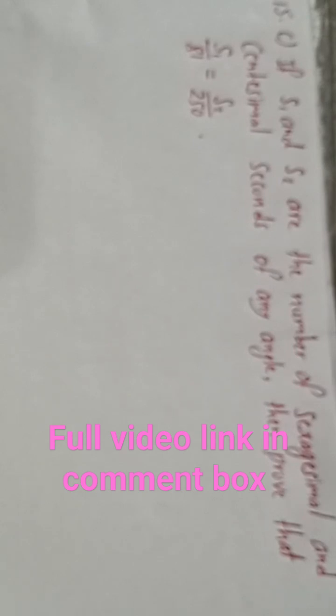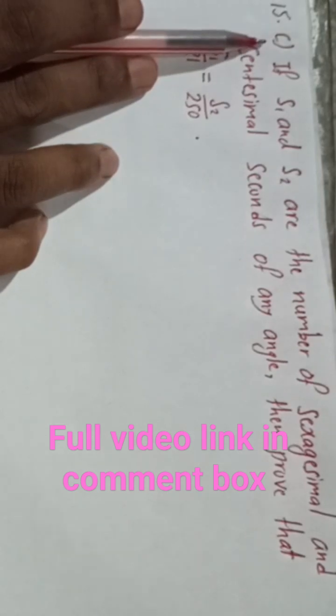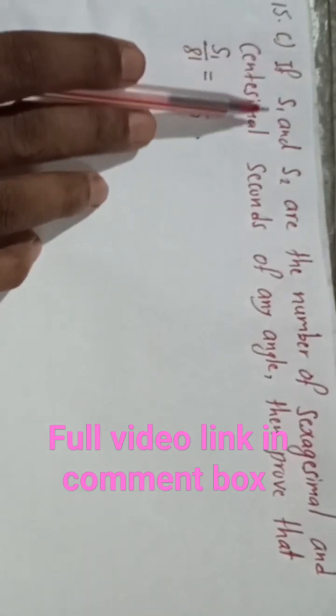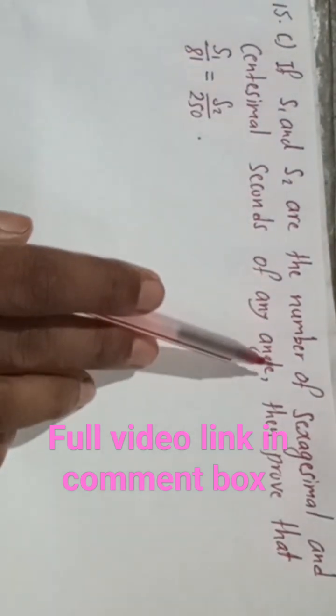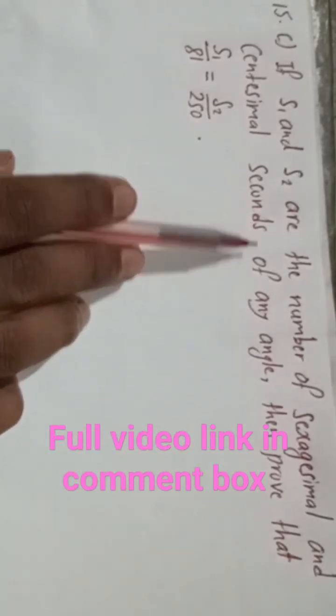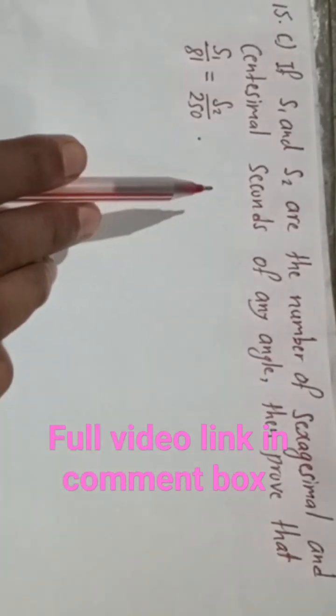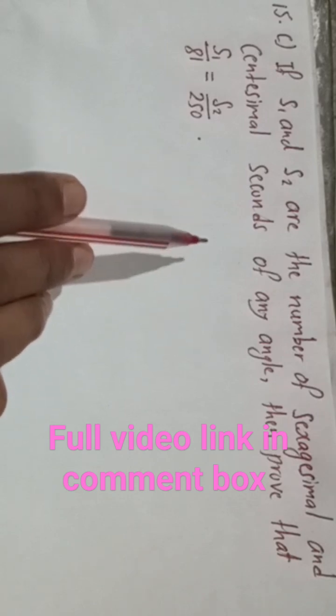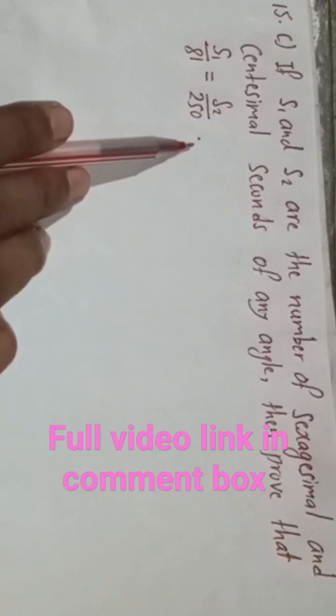Hi everybody. Welcome back to Vimal Surjee YouTube channel. This is now question number 15C. If S1 and S2 are the number of sexagesimal and centesimal seconds of any angle, then prove that S1 by 81 is equal to S2 by 250.